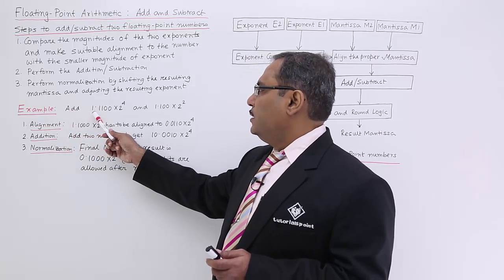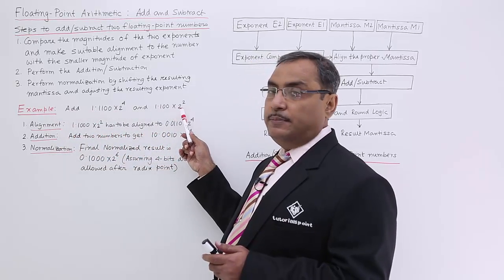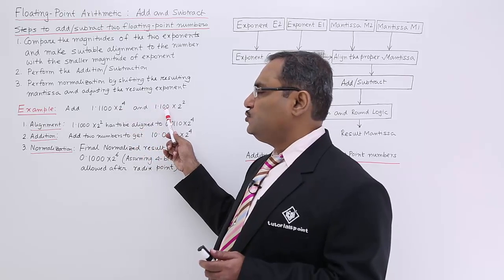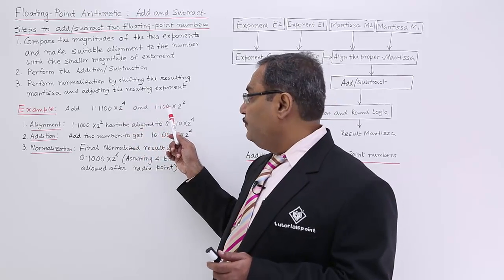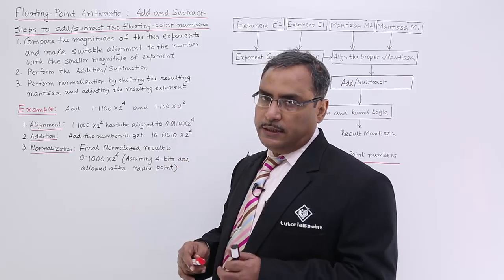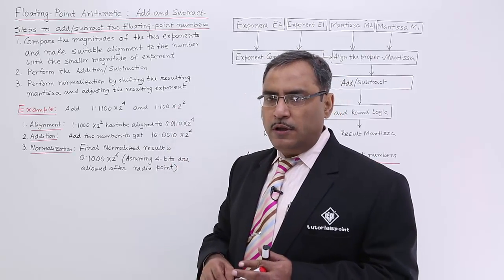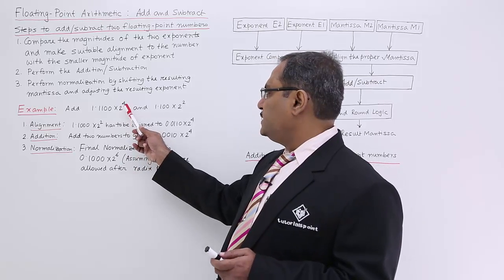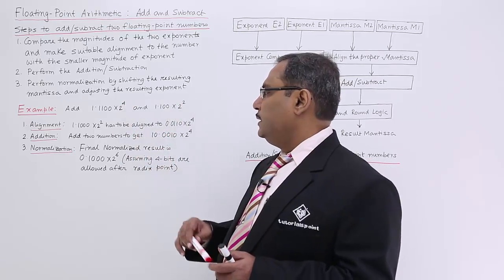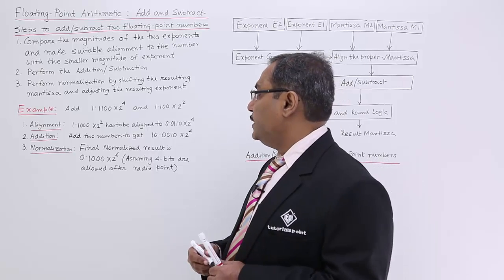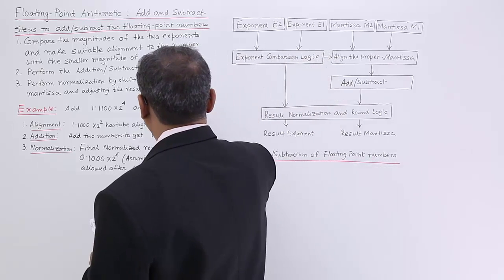Example: add this number and this number. When these two numbers have been asked to get added, then obviously I should consider that very number which is having the exponent smaller for the alignment. Here the exponent smaller number is this one. I should consider it.